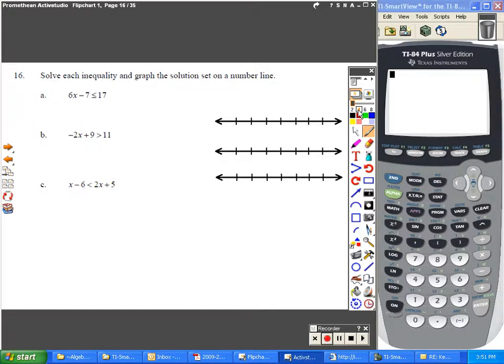It does solve just like an equation where you just start by doing the opposite. Plus 7 on both sides, you get 6x is less than or equal to 17 plus 7, which is 24. Then you're going to divide both sides by 6. That gives you x is less than or equal to 4.